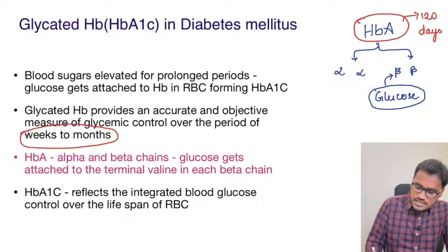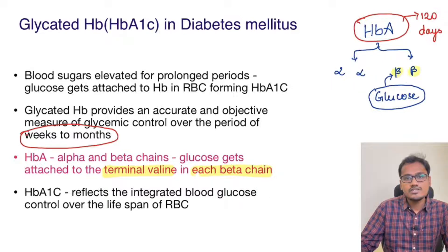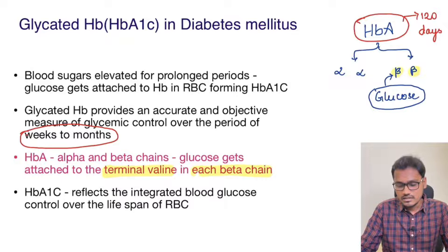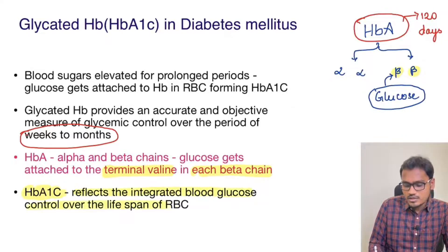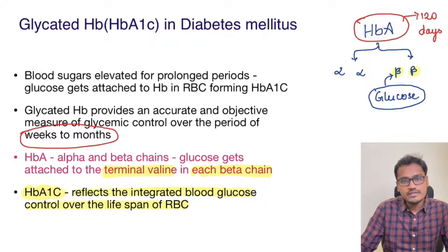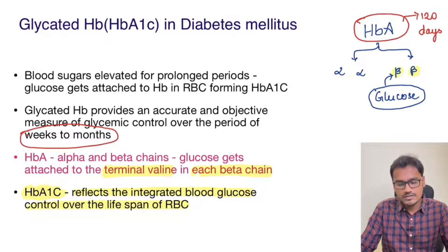It is getting attached at the terminal valine in each beta chain. In both beta chains, the excessive amounts of glucose start to accumulate and survive till the lifespan of the RBCs. Thus HbA1c will reflect integrated blood glucose control over the lifespan of the RBC, which is around 120 days. This is referred to by laypeople as the average blood glucose of three months, but it is the glucose level measured over the period of weeks and months.